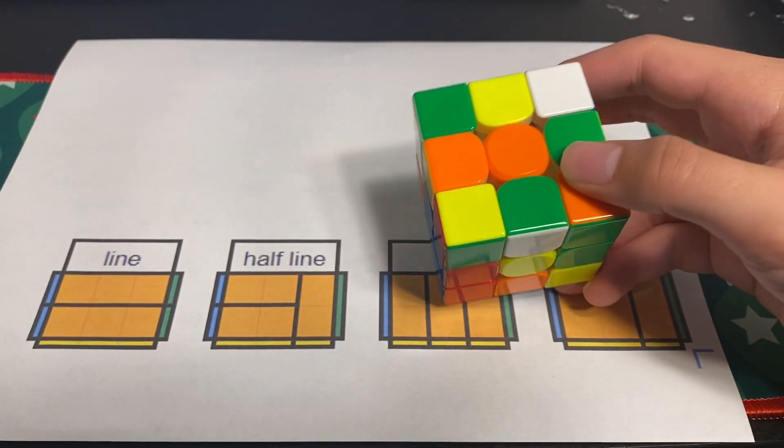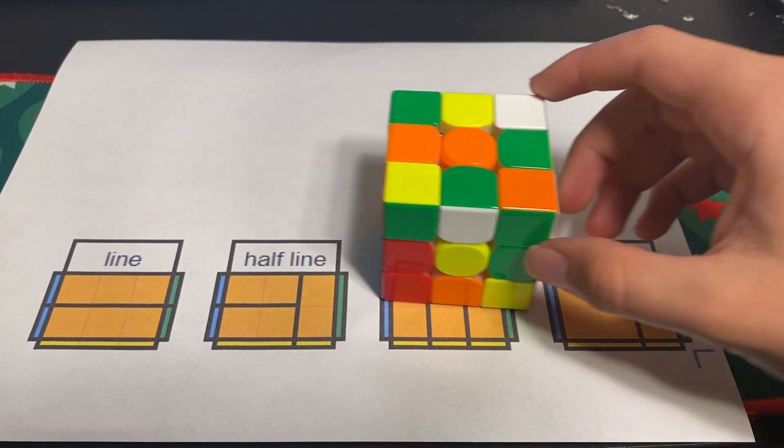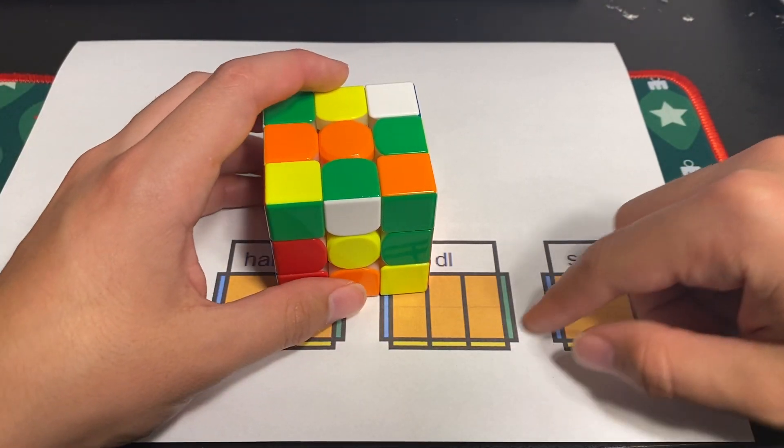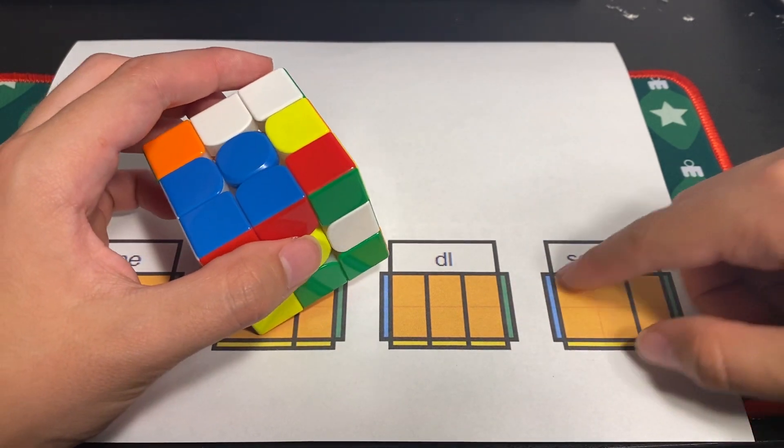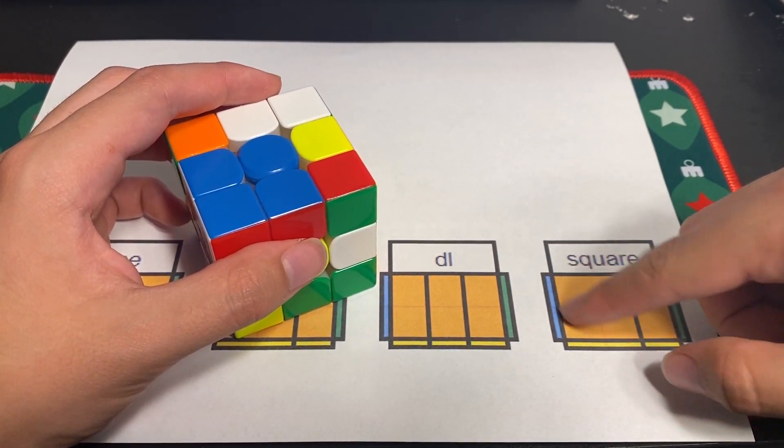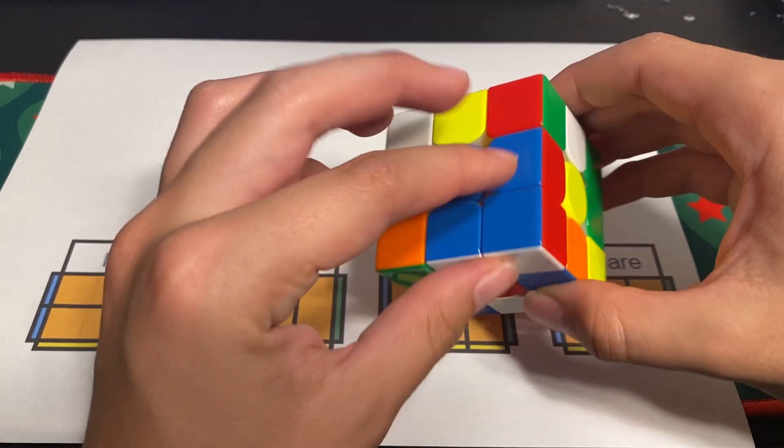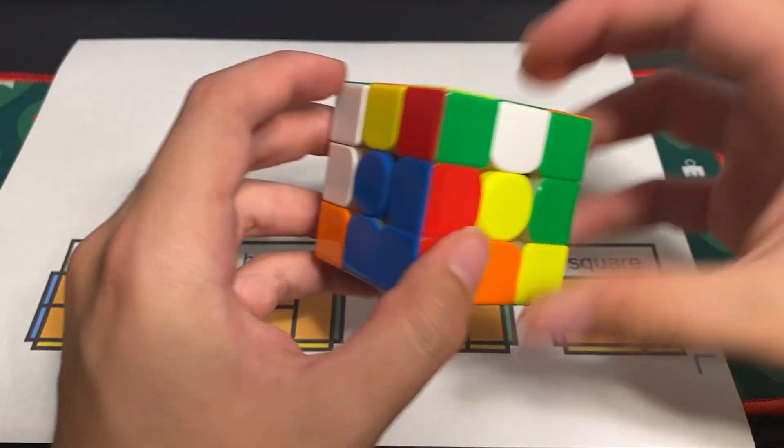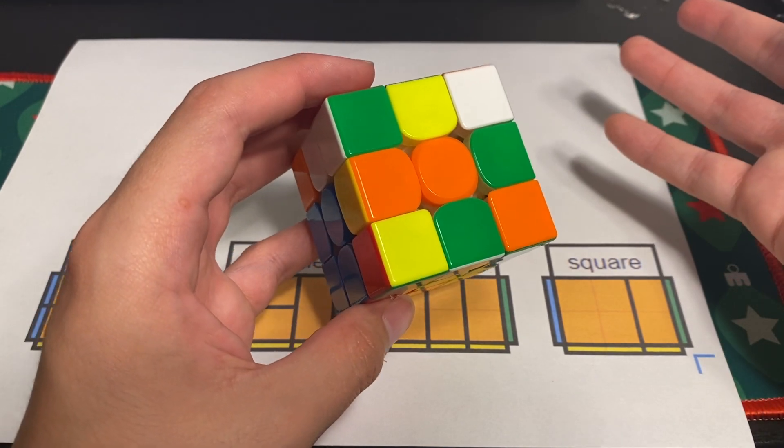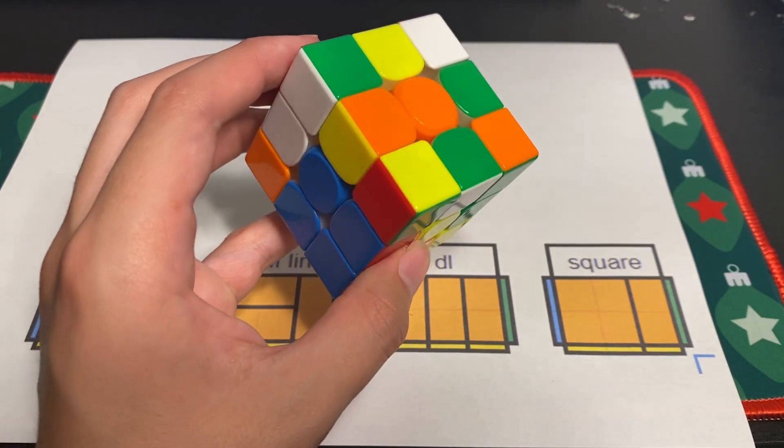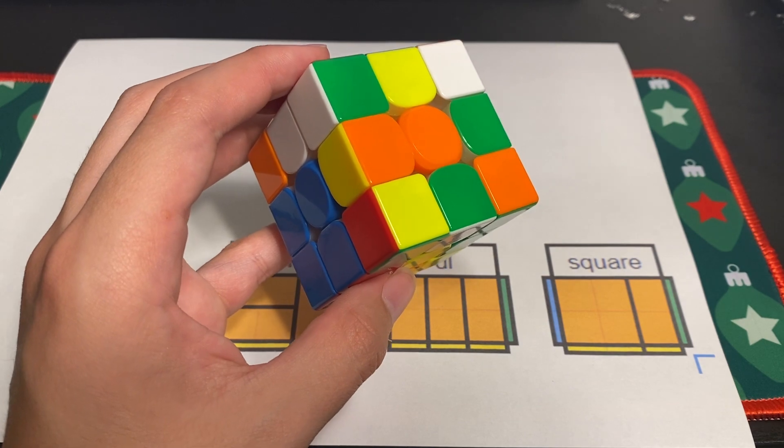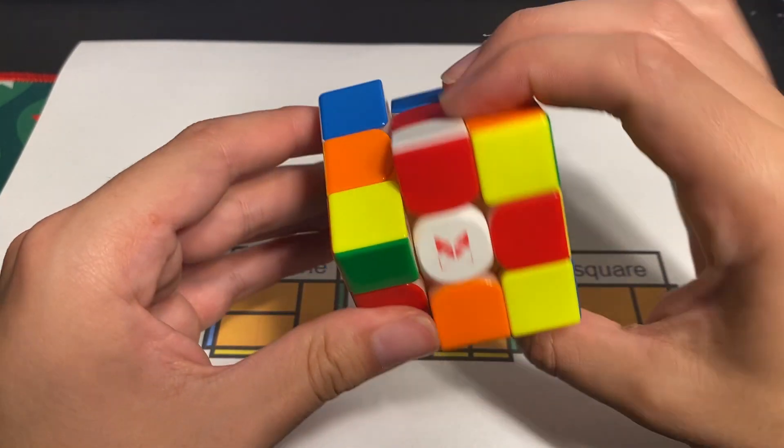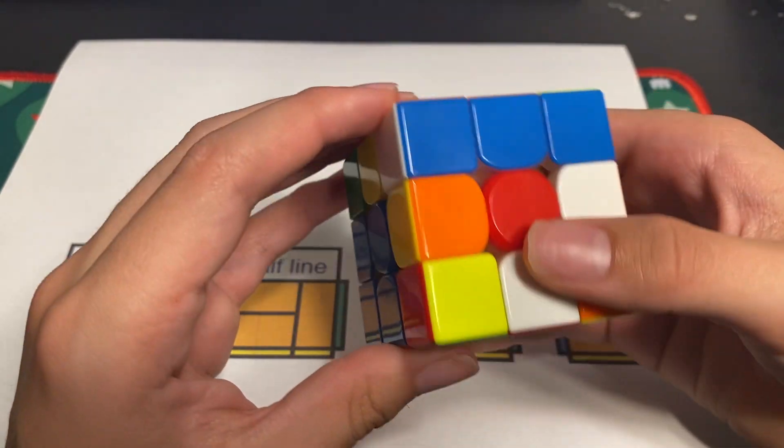The next kind of first block approach we're going to talk about is square. Square is very similar to DL but you've just already had part of it completed by luck. So on the scramble you'd see a two by two by one block and if you decided to use this for your first block then that would be a square first block because the square is already done. So you have the square and then you just do your other first block pair.